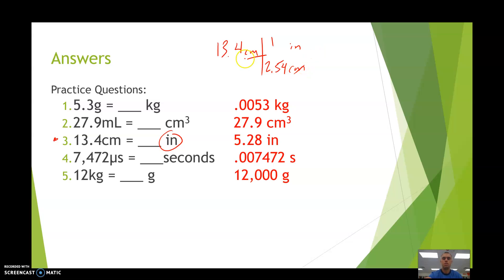From there, your units cancel out, and then we solve by dividing 13.4 divided by 2.54, and that's going to be your final answer. 13.4 divided by 2.54 is equal to 5.28 inches. So there's another example of our unit conversions.